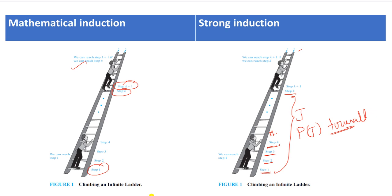In a proof by Strong Induction, the Inductive Step shows that P(J) is true for all positive integers not exceeding K. This is a very important point to remember. Then we prove that P(K+1) is true. That is why Strong Induction is called 'strong' — it assumes truth for all values up to K, not just K alone.